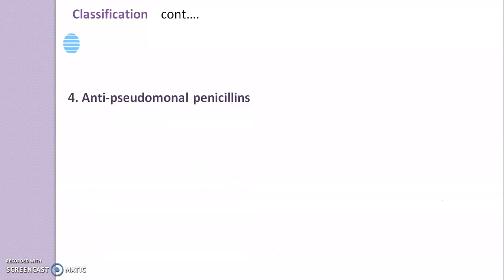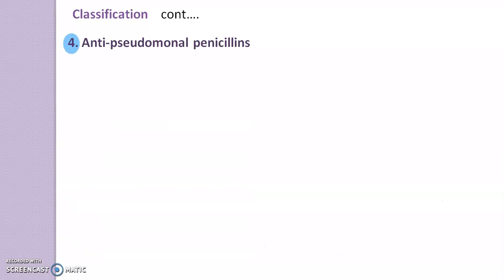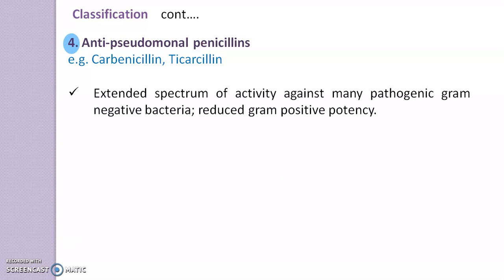The next class is anti-pseudomonal penicillins. Examples include carbenicillin and ticarcillin. These have an extended spectrum of activity against many pathogenic gram-negative bacteria, with reduced gram-positive potency, and have good activity against Pseudomonas aeruginosa.